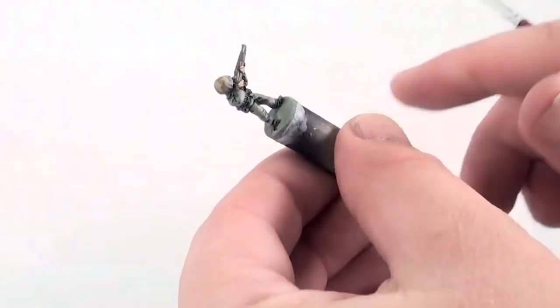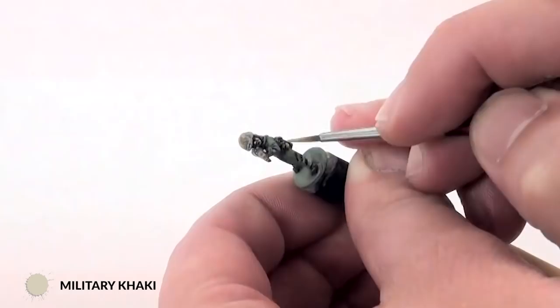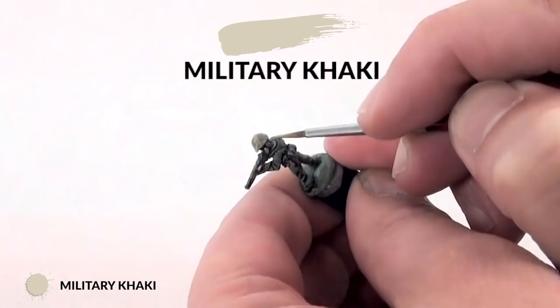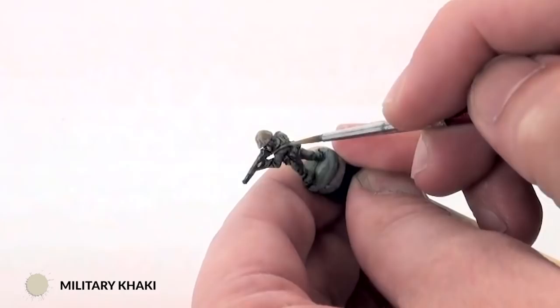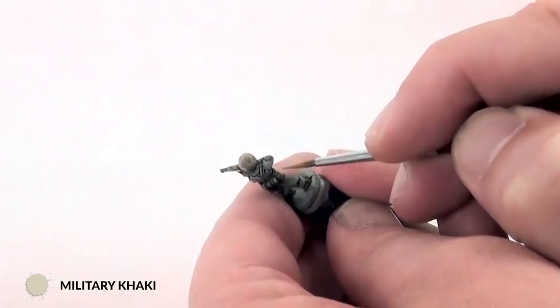Once I've painted the camouflage on the helmet, I move on to the web gear and any other canvas. What I do with this is I get some military khaki, so a much lighter khaki color than the Comrade khaki I used initially. And I just paint that on over the top, leaving a little bit of the original color that's been darkened by the wash, just to simulate shadow.